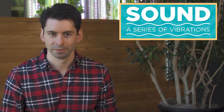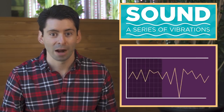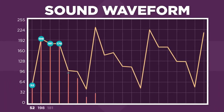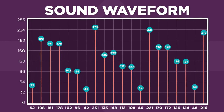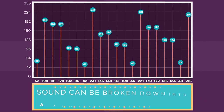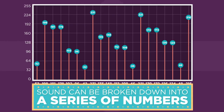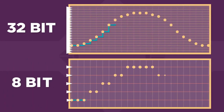Every sound is basically a series of vibrations in the air. Vibrations can be represented graphically as a waveform. Any point on this waveform can be represented by a number, and this way, any sound can be broken down into a series of numbers. If you want higher quality sound, you would pick 32-bit audio over 8-bit audio — more bits means a higher range of numbers.